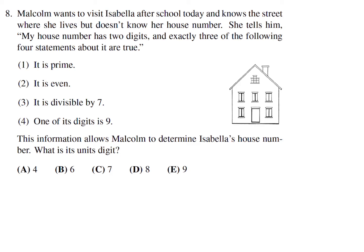This information allows Malcolm to determine Isabella's house number, what is its unit's digit? Okay, let's think about this. Prime and even, well, these two don't go together. The only even prime is 2, but this has two digits. So one of these has to be false.